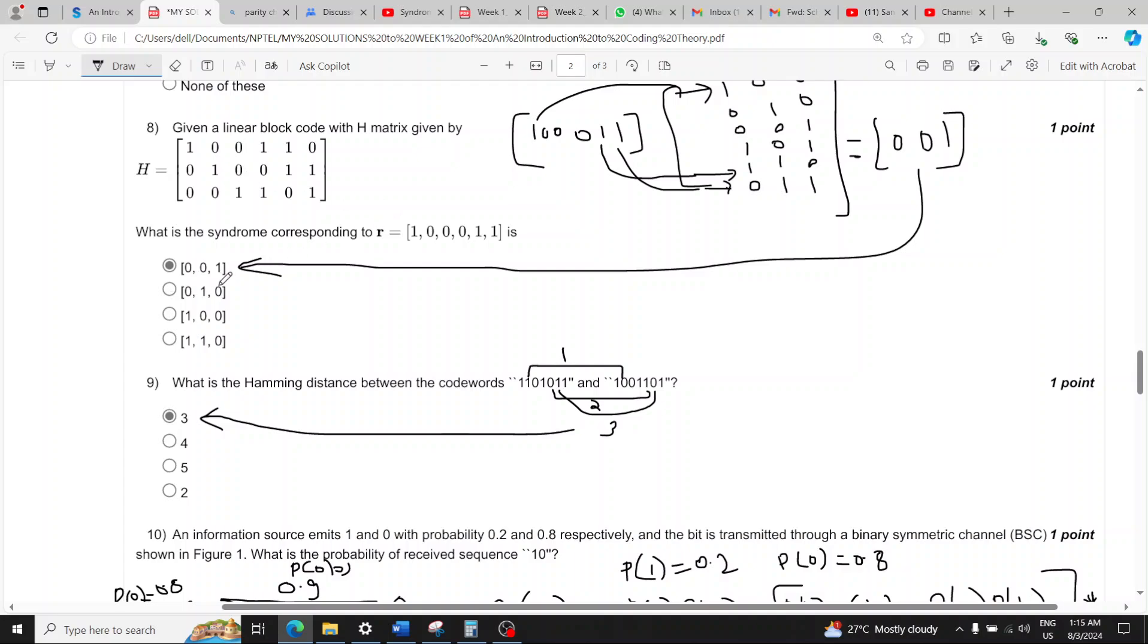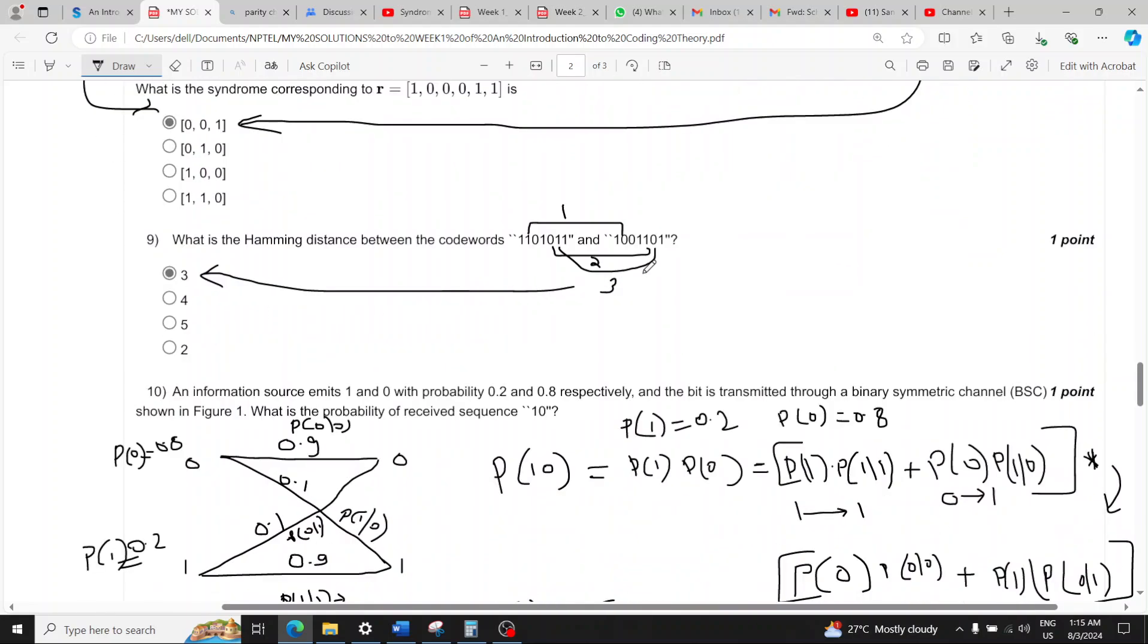Question eight has option A as answer. Question nine has option A as answer because the Hamming distance between these two code words is the number of bits in which they differ.